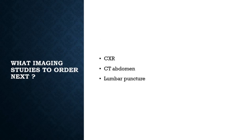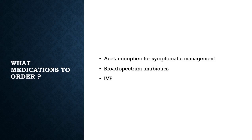After ordering labs, consider imaging studies. Order a chest X-ray to look for a new infiltrate indicating pneumonia, or lymphadenopathy suggesting tuberculosis or lymphoma. CT abdomen is not routinely ordered but is appropriate if you have high suspicion for occult abscesses or hematomas. If there are any subtle central nervous system symptoms or signs, think about ordering head or spine imaging and performing a lumbar puncture as well.